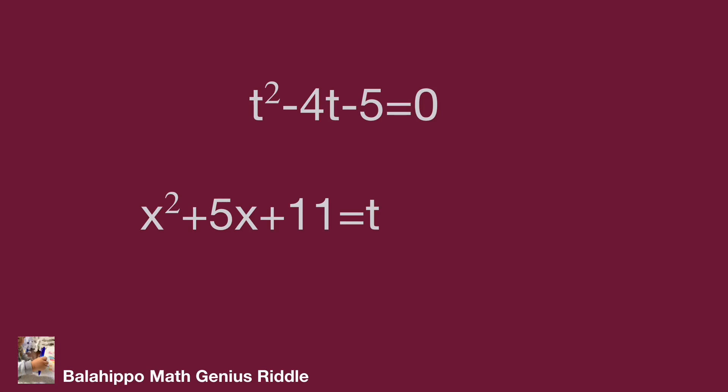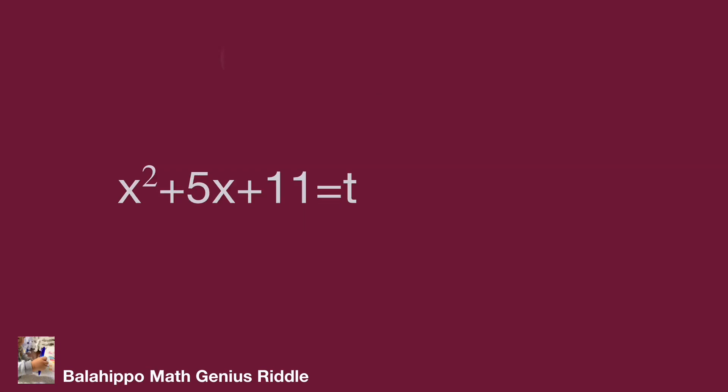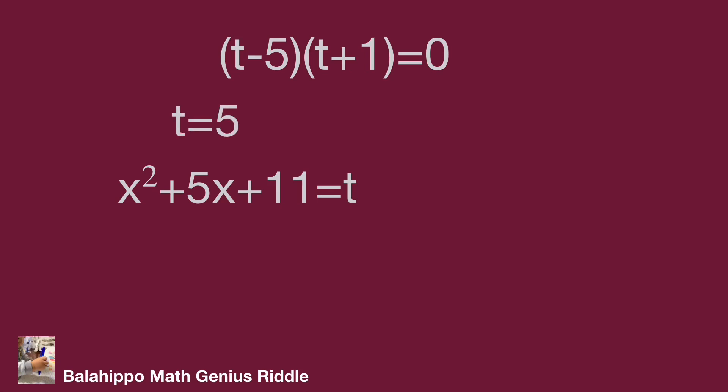Factorizing gives quantity t minus 5 times quantity t plus 1 equal to 0. So t equals 5 or t equals minus 1.